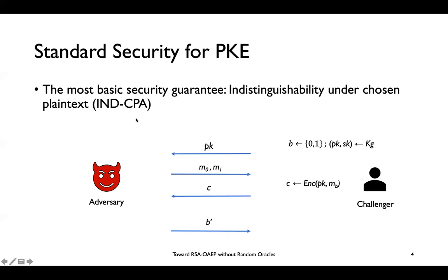We can also strengthen the security definition by giving the adversary access to a decryption oracle, where the adversary can make a decryption query on ciphertext C* and get the underlying message M*. If we give the adversary this oracle access, then we have IND-CCA security.